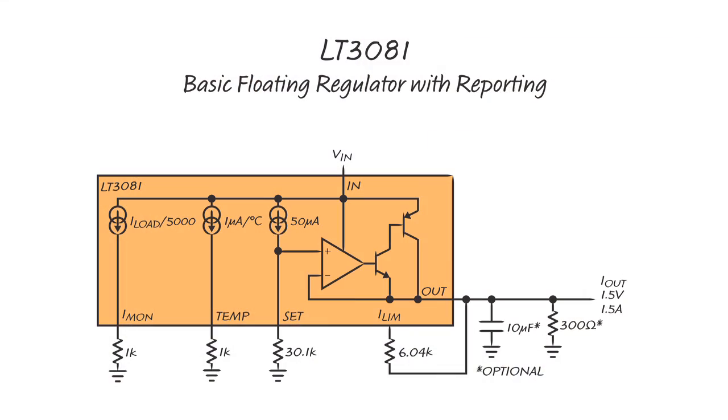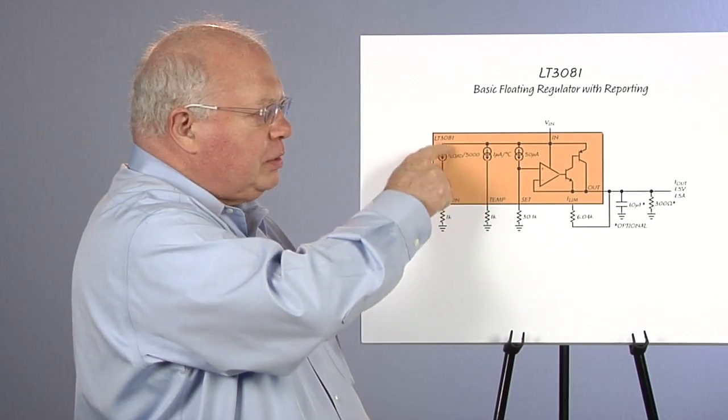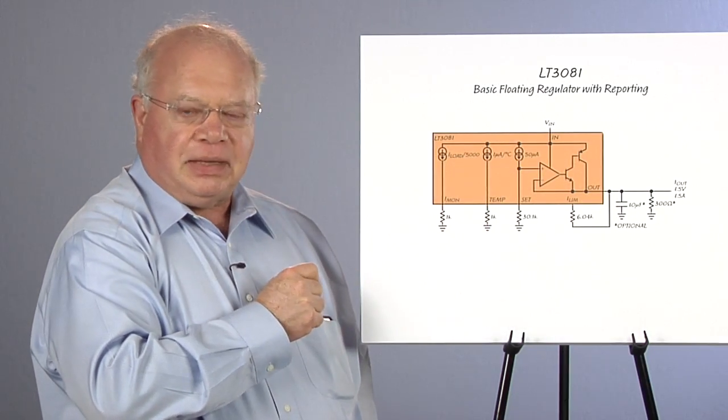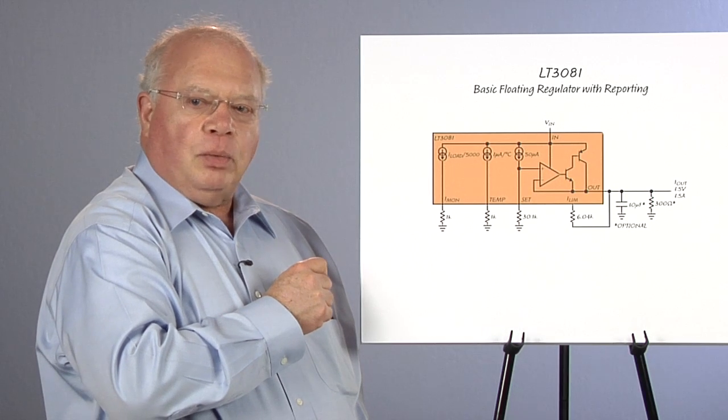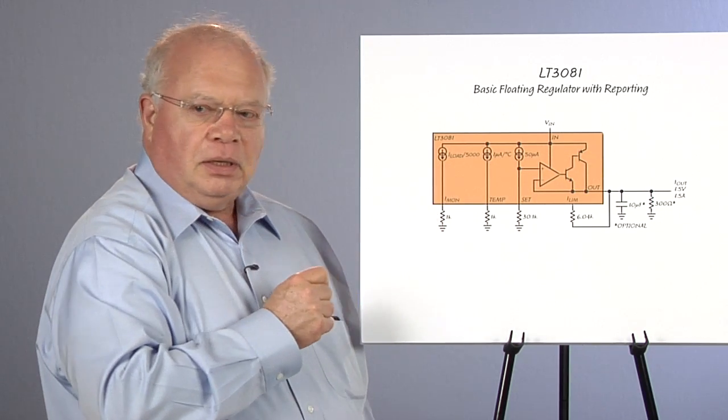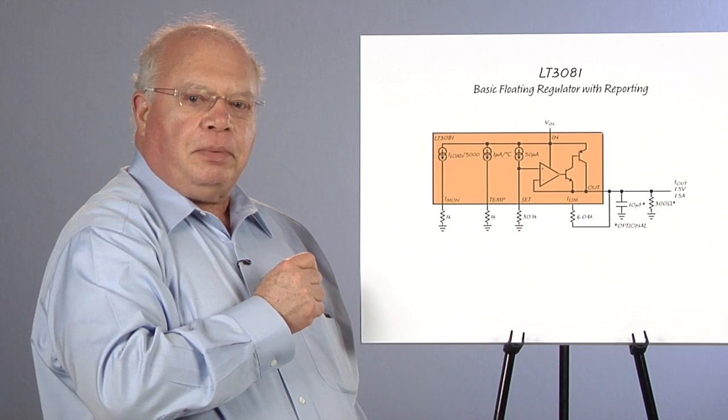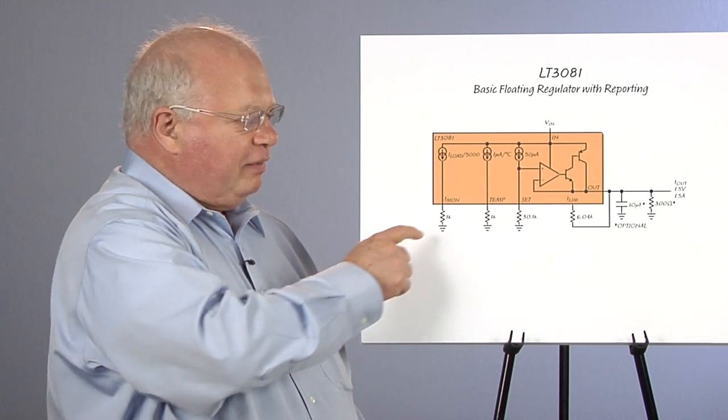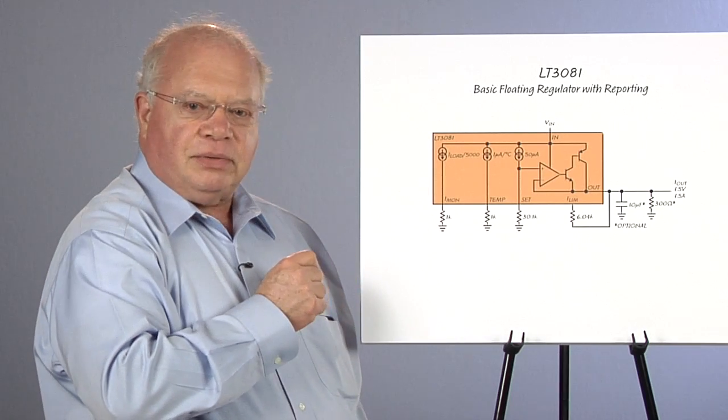This is the basic circuit of the LT3081. We have two current sources for monitoring. One provides an output current proportional to temperature, and we get one microamp per degree C. The other current source is proportional to our output current, and we get I out over 5000 through the 1K resistor to ground.